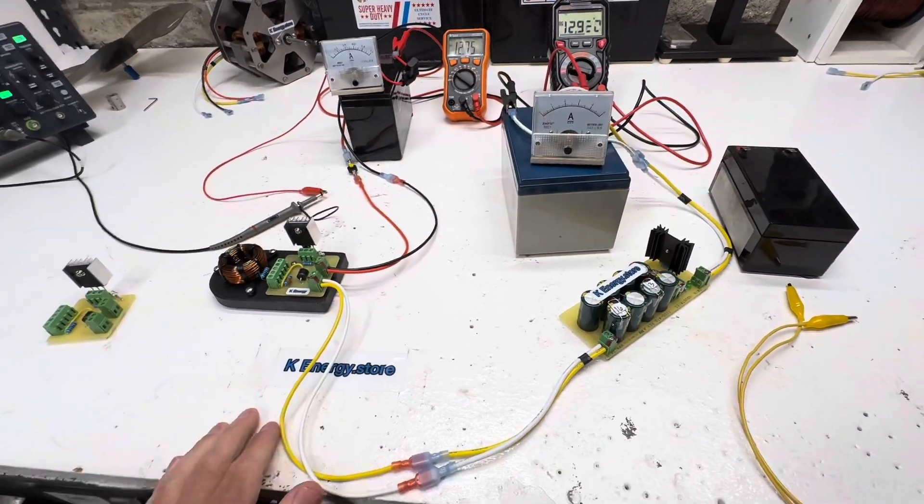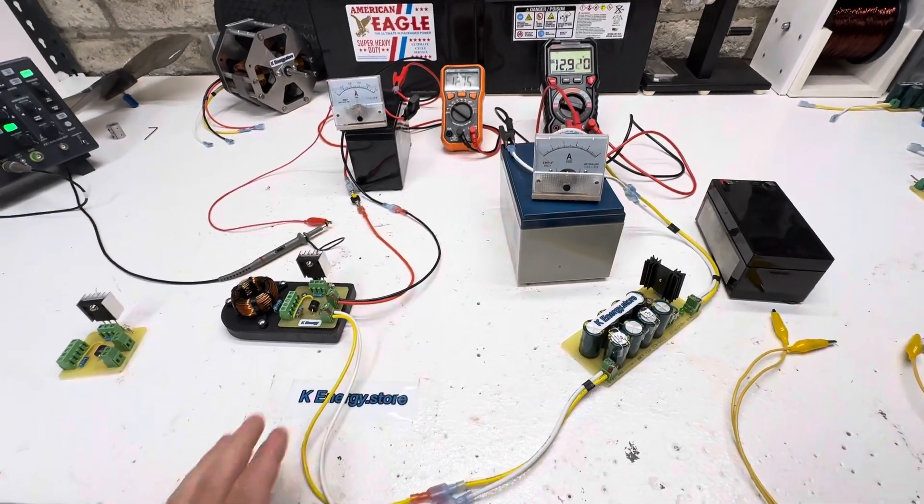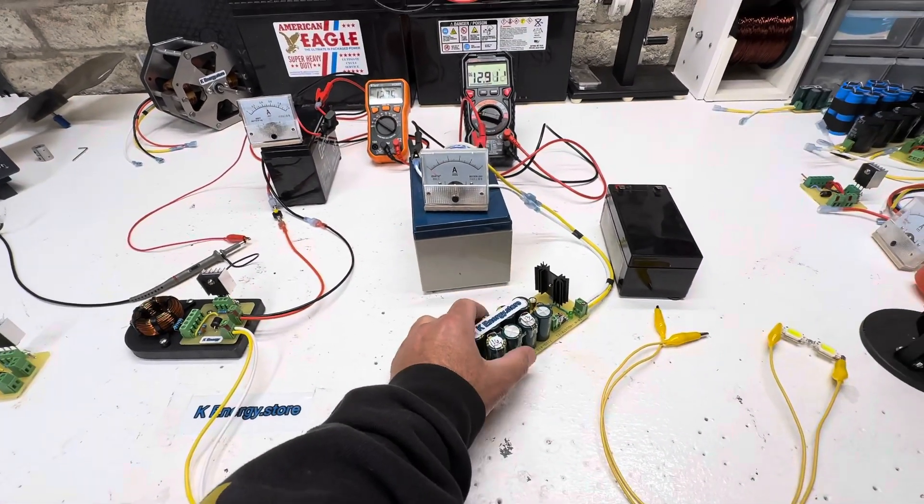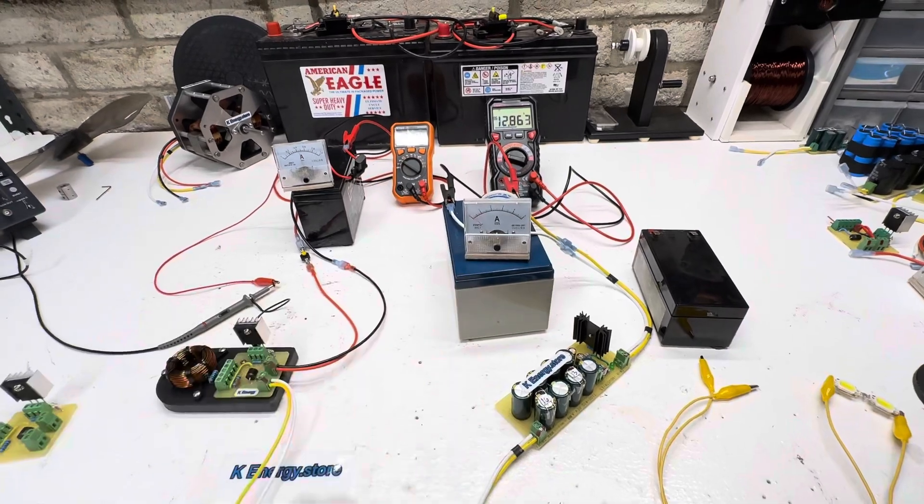You could charge this directly with the negative spikes, or you could use a cap dump to convert it to amperage and charge your batteries.